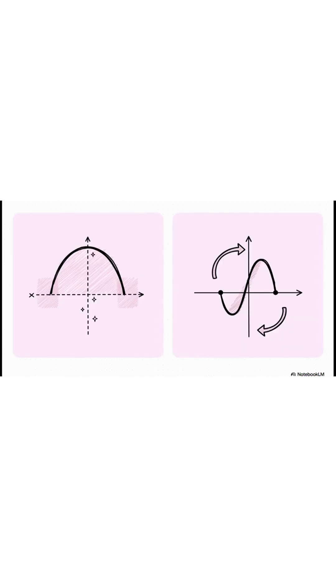The whole idea really boils down to two types of functions, even and odd. An even function, like x squared, is a perfect mirror image across the y-axis. You plug in a negative x, you get the exact same result as if you plugged in a positive x.